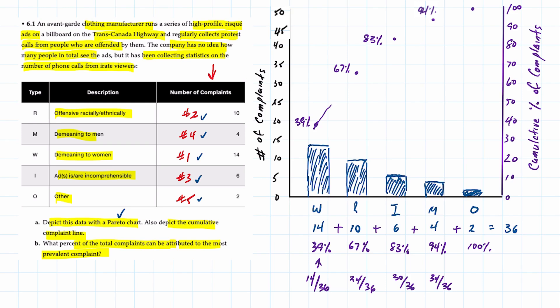If I connect the dots you can see that there's a slight bend to this. And that's how we come up with the cumulative percentage curve that's associated with the Pareto chart. So now we've completed the second part of requirement A.